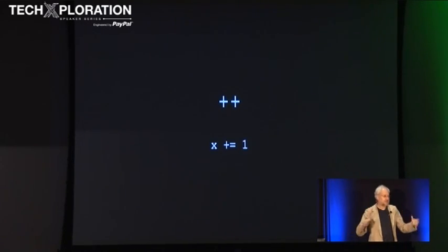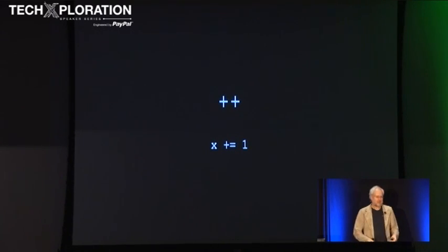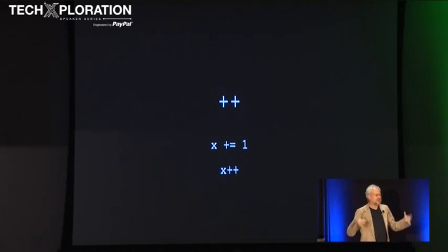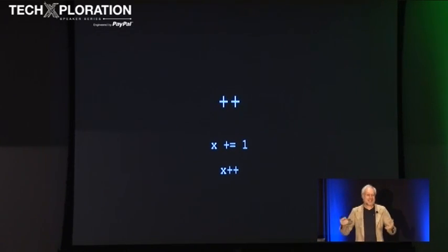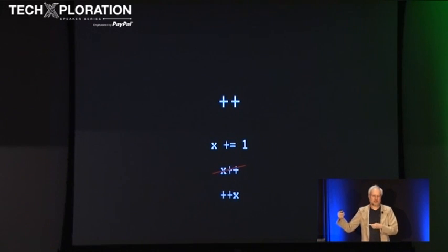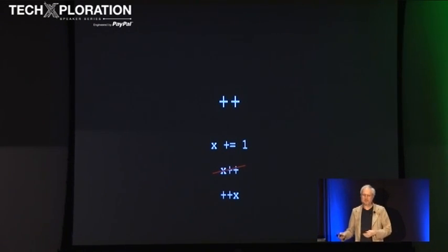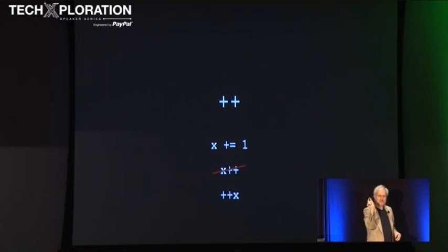So instead I say x plus-equal one. I do that everywhere — if I have a for loop and I'm going to increment the induction variable, I'll say x plus-equal one. I hear from people saying 'I should be able to write x plus-plus because it means exactly the same thing and it's one character shorter.' But it doesn't mean the same thing — plus-plus x means the same thing as x plus-equal one, not x plus-plus. Anytime I see someone writing x plus-plus in the increment position, I have to ask: does this person know the difference between pre-increment and post-increment? This turns out to be a really subtle off-by-one error that is very hard to find and correct.